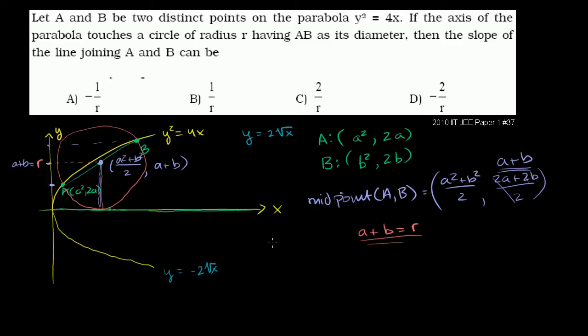Now let's try to find the actual slope of this diameter. That's what they want to ask us. Let's figure out the slope. The slope is going to be change in y over change in x. So 2a minus 2b over a squared minus b squared.